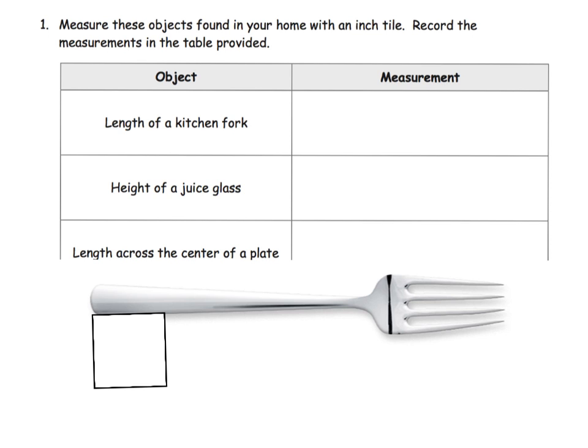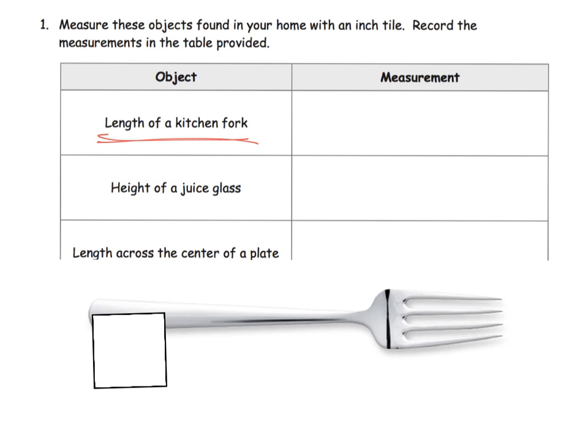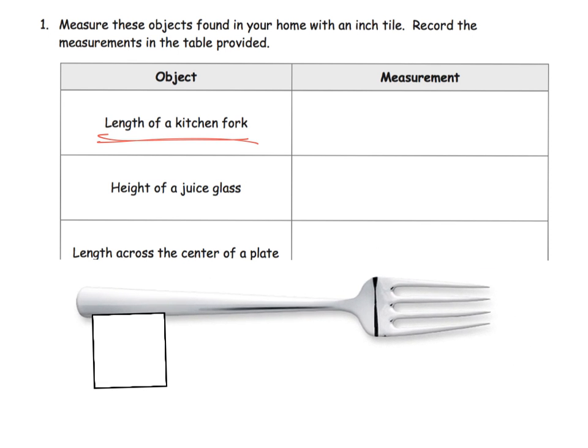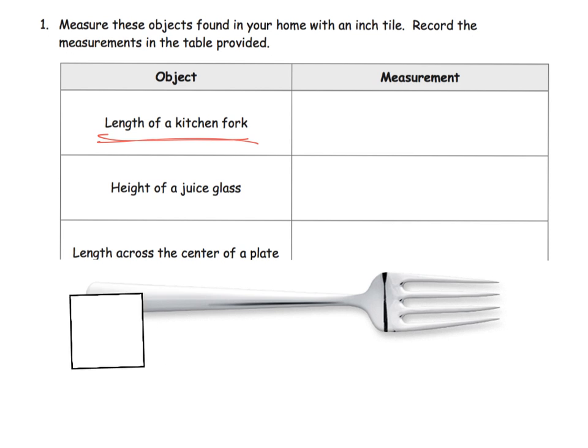And so the idea is in this case, let's measure the length of a kitchen fork. So here is our kitchen fork, but we're not going to use a ruler. Instead, we are going to use this square inch and we're going to iterate it until we've measured a nice approximation for the length of the fork. So I'm going to just go and mark and then I'm going to mark and I'm going to iterate it and slide it and mark.